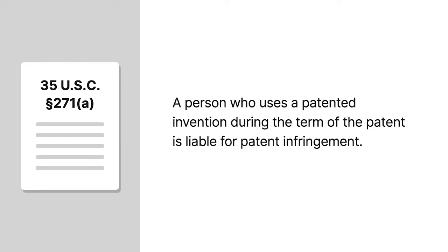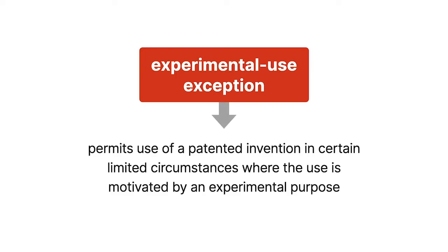Under the General Patent Infringement Statute, a person who uses a patented invention during the term of the patent is liable for patent infringement. However, a person may escape liability by asserting the Common Law Experimental Use Exception, which permits use of a patented invention in certain limited circumstances where the use is motivated by an experimental purpose.